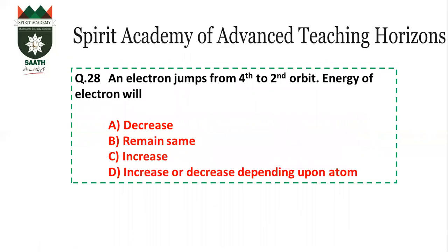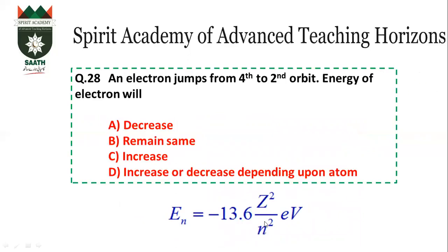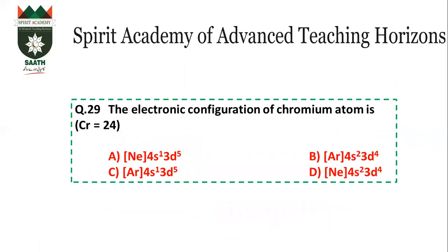Question number 28: An electron jumps from the fourth to the second orbit. The energy values are negative, which means the energy of the first orbit is the most negative (lowest). As the electron moves to higher orbits, the energy becomes less negative (increases). The energy of the fourth orbit is less negative than the second orbit.